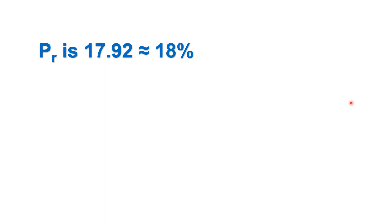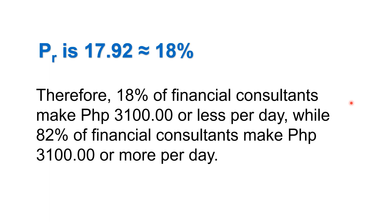What does 17.92 or 18% mean? How do we interpret this?